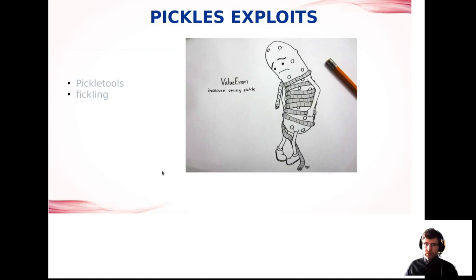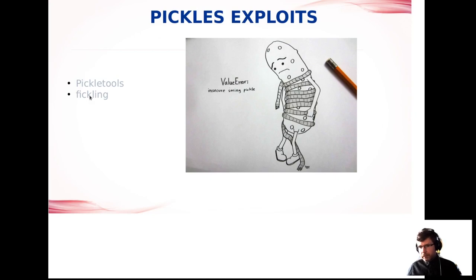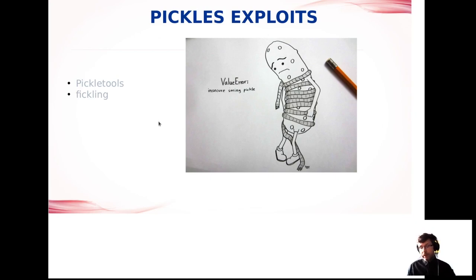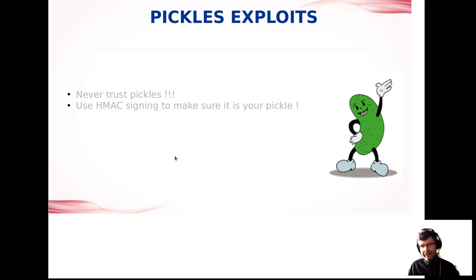There are ways to investigate pickles. We can use pickletools, which shows exactly what is in the pickle and what it will be doing step by step. There is also the fickling library for creating malicious pickles and checking what is inside a pickle. We cannot trust pickles — this is the first rule. The second rule is to sign pickles that we want to trust and check the signature when loading.